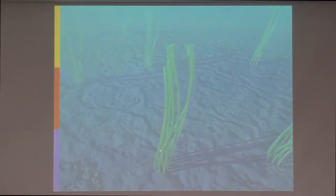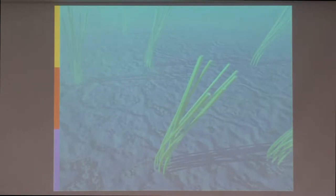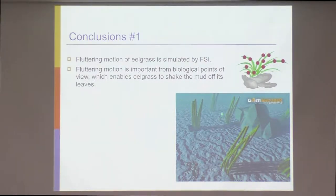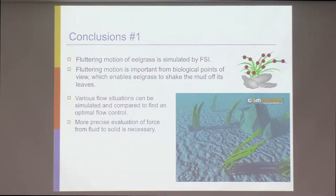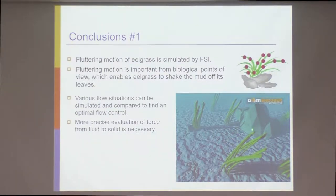With many eel grasses set, the motion continues. To conclude the first part: the fluttering motion of eel grass is simulated by fluid-structure interaction with the immersed boundary method. This fluttering motion is important from a biological point of view, enabling the eel grass to shake mud off its leaves. Using the immersed boundary method, various flow situations can be simulated and compared to find optimal flow control — for example, placing obstacles in the flow. Without the immersed boundary method, more precise force evaluation from fluid to solid would be necessary.